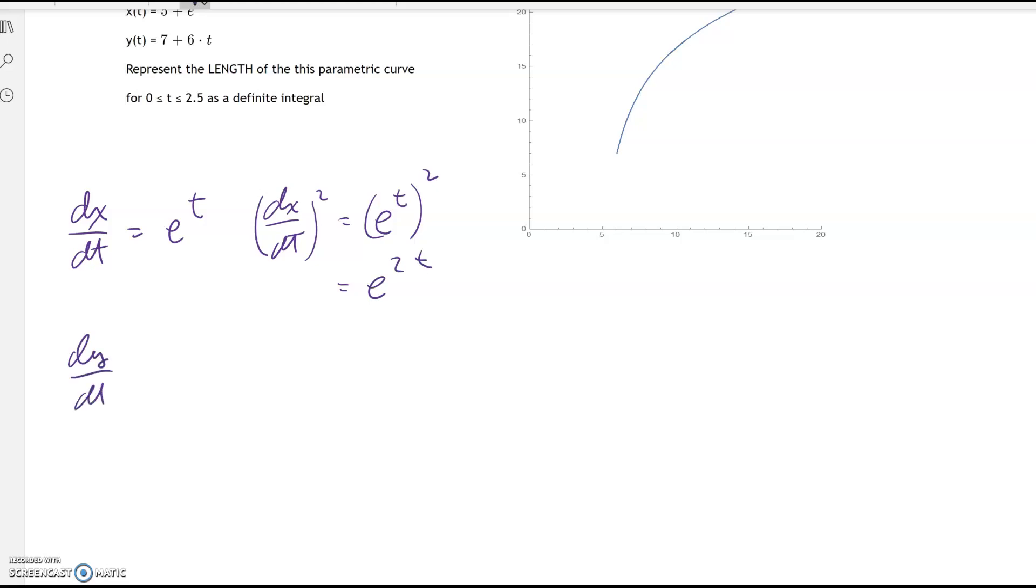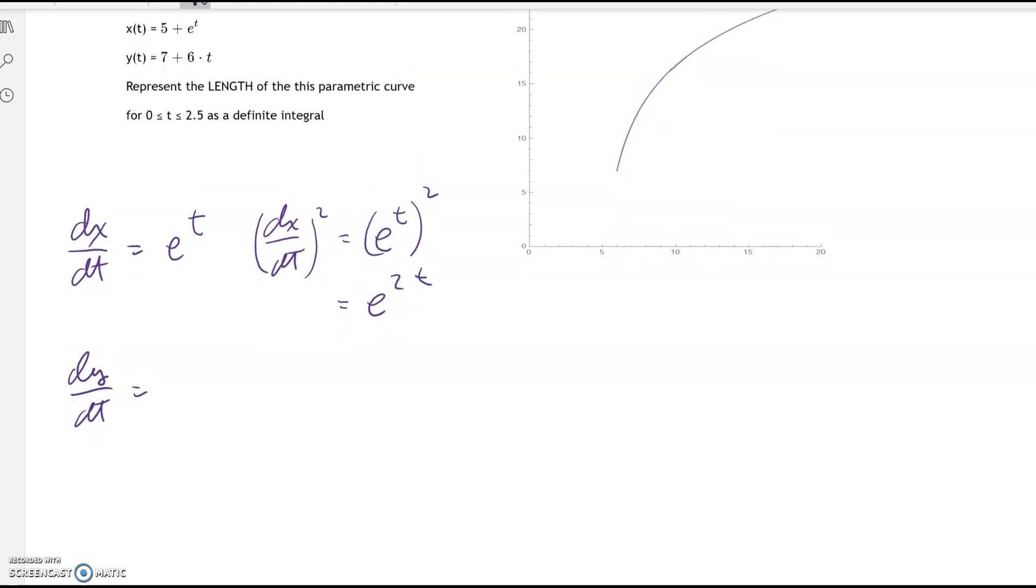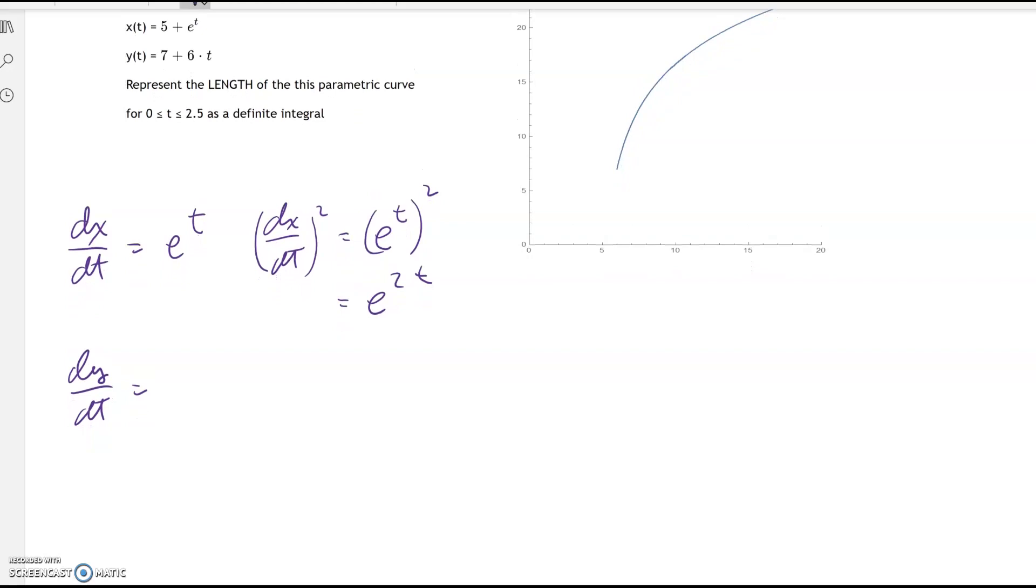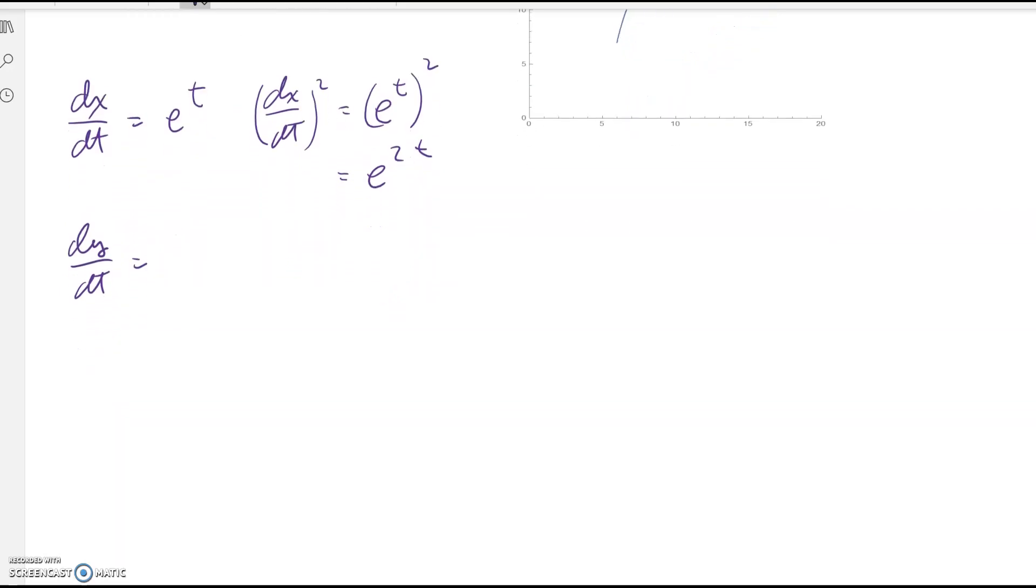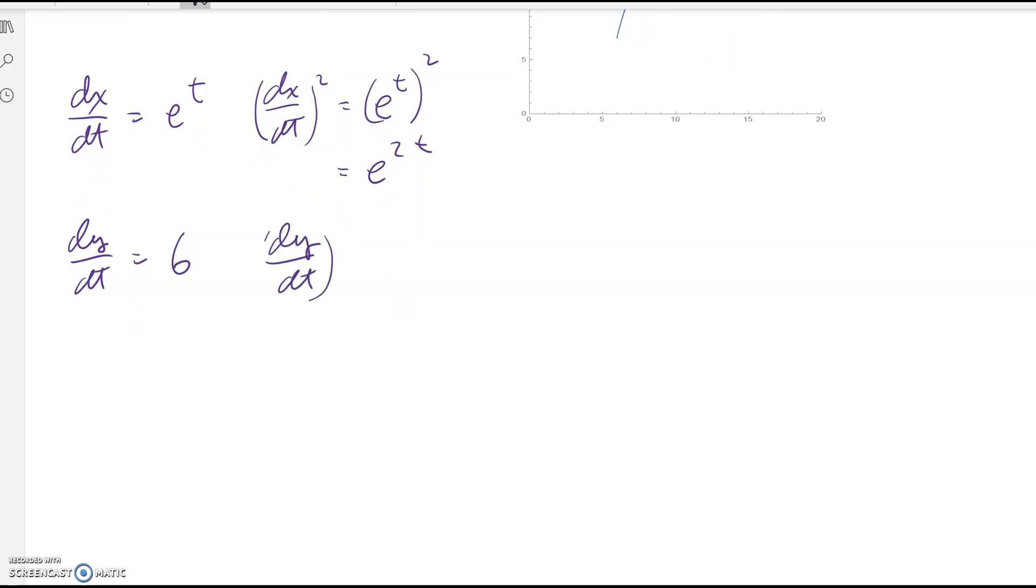dy/dt equals the derivative of 7 plus 6t. The 7 drops out, derivative of 6t is just 6, and then the square, dy/dt squared is just 6 squared, which is 36.